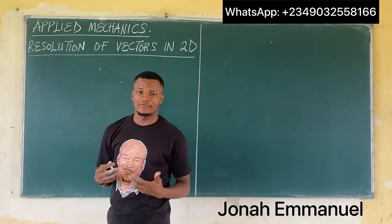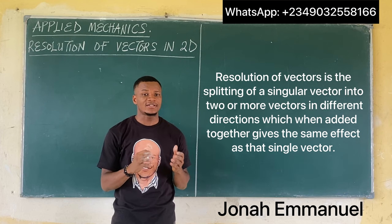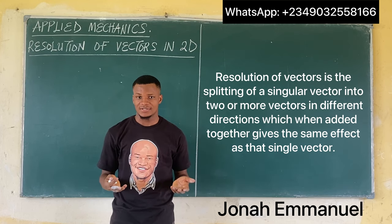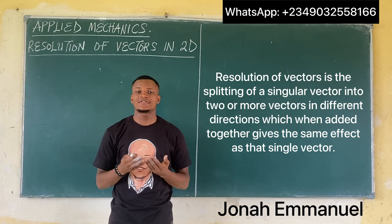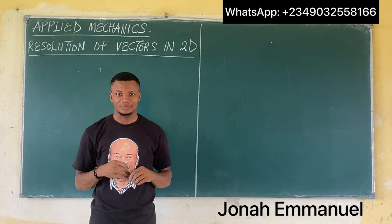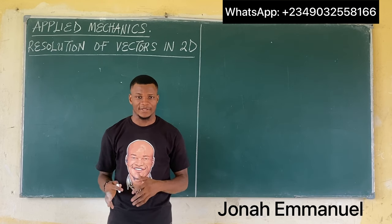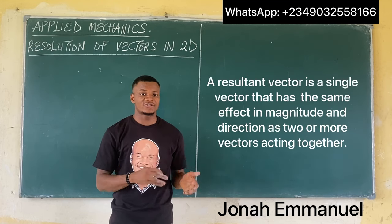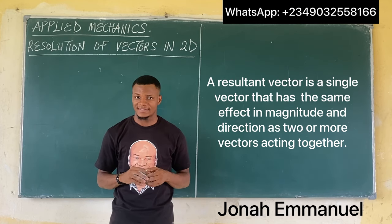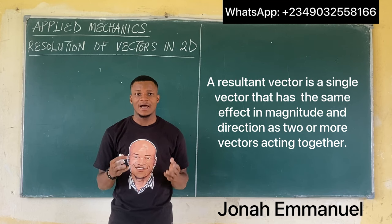When we say resolution of vectors, what do we mean? The resolution of vectors is simply the splitting of a singular vector into two or more vectors in different directions which, when added together, gives the same effect as that single vector. That singular vector which is being split is called the resultant vector. By definition, a resultant vector is simply a singular vector that has the same effect in magnitude and direction as two or more vectors acting together.